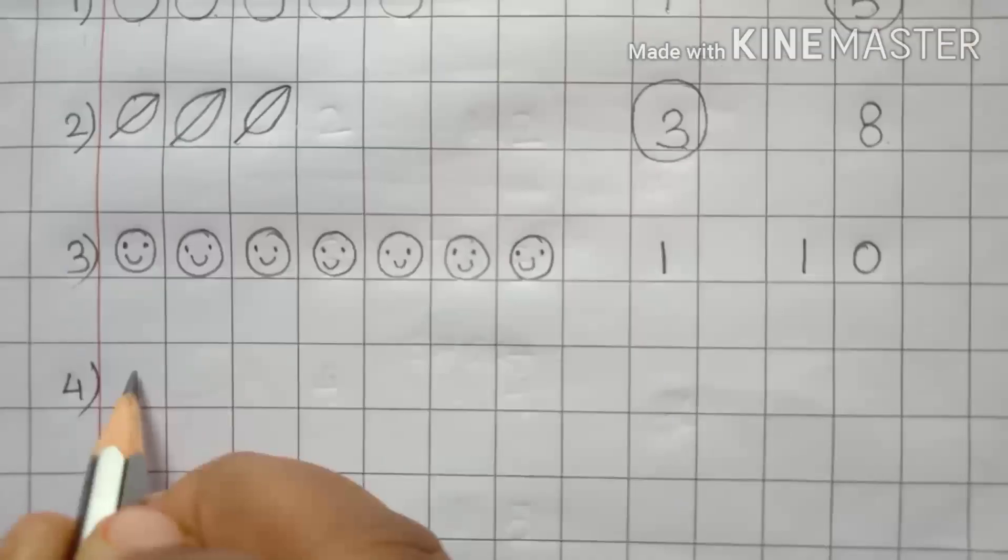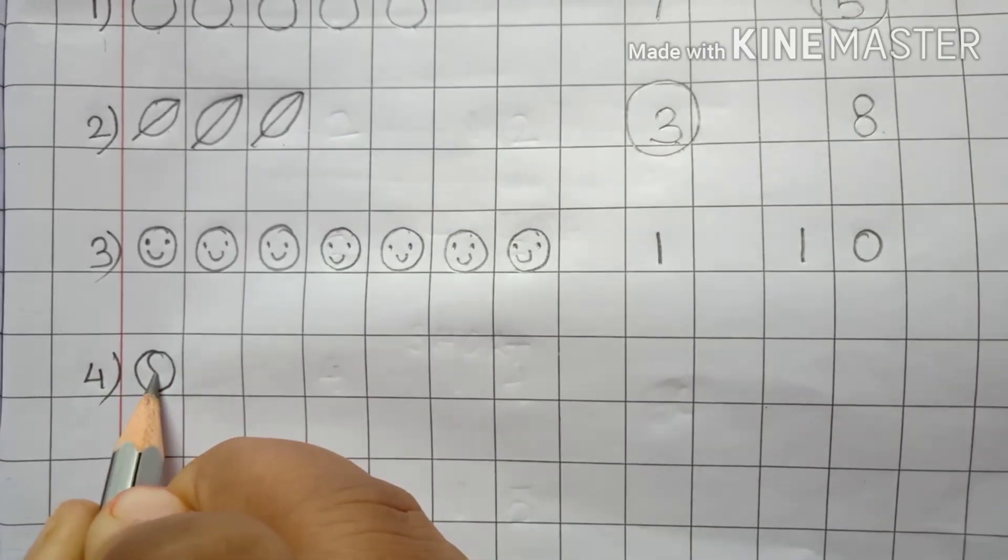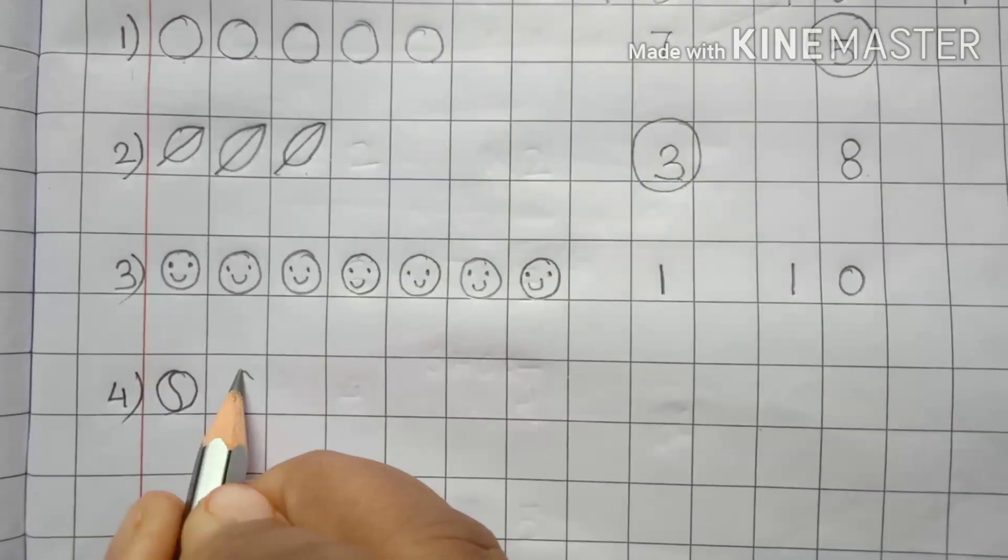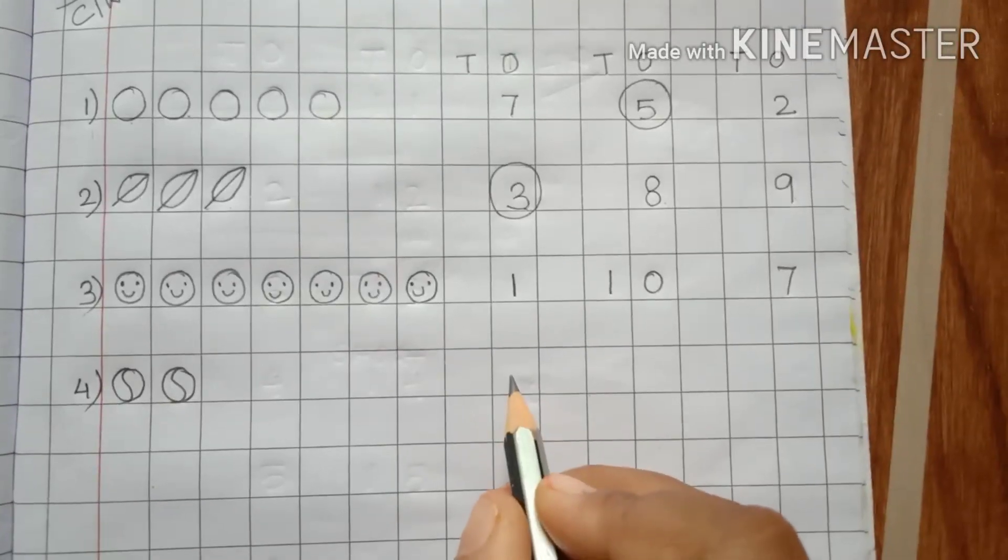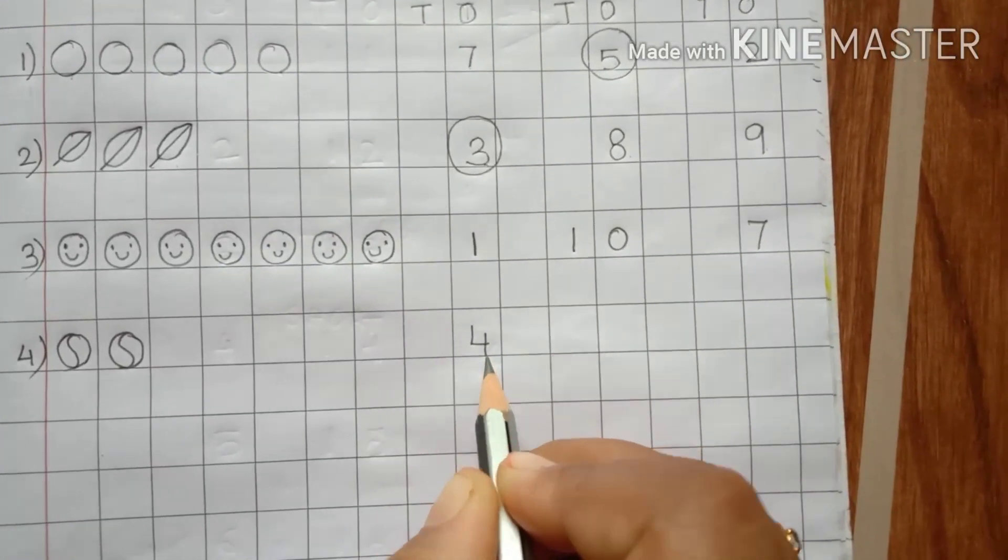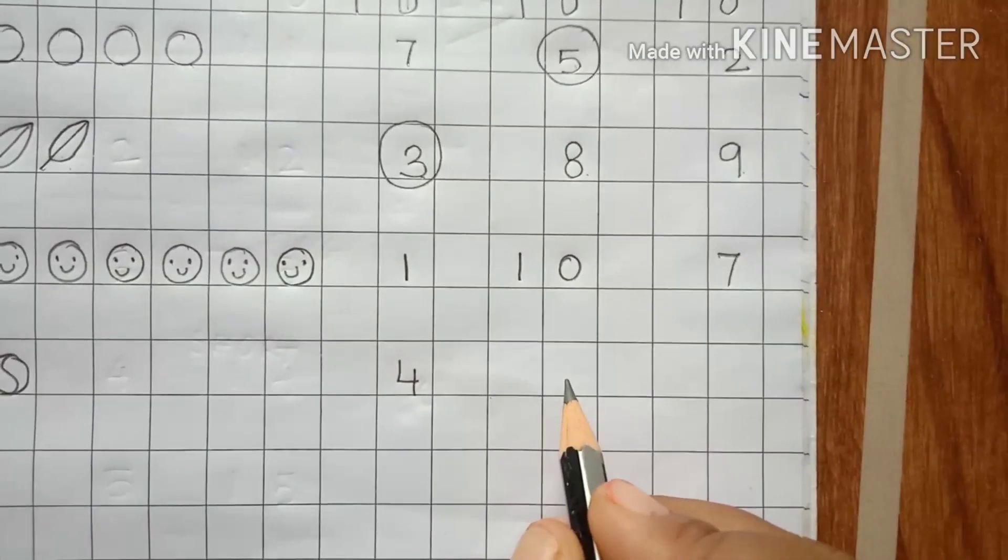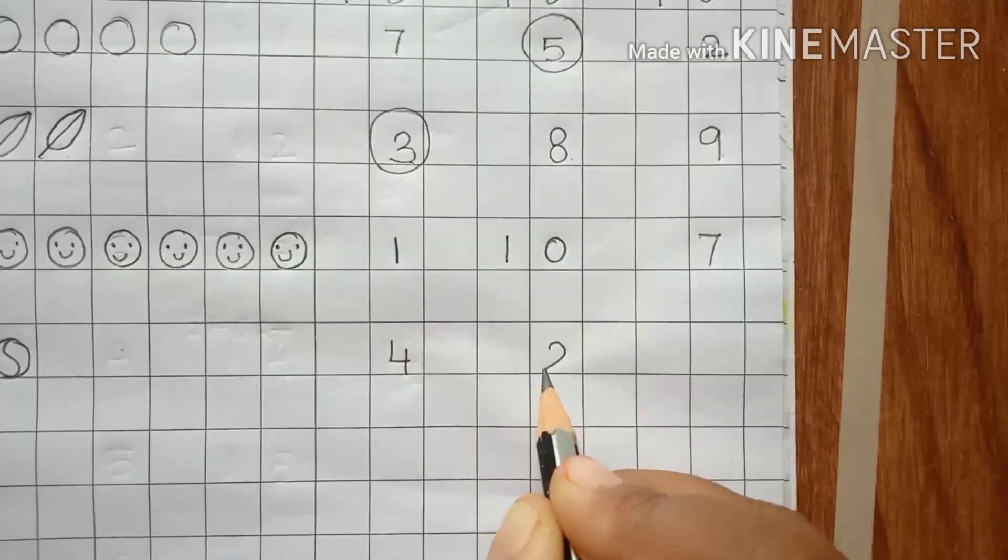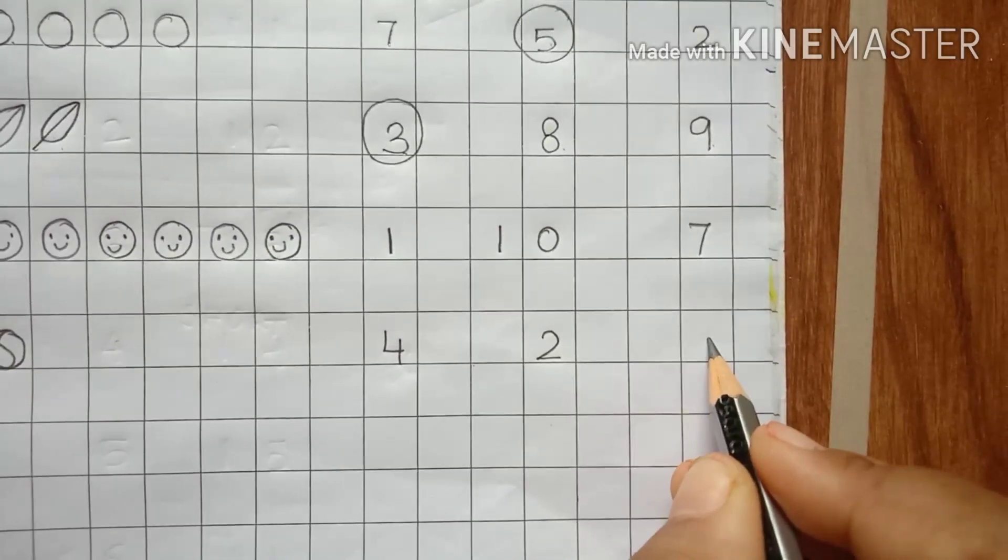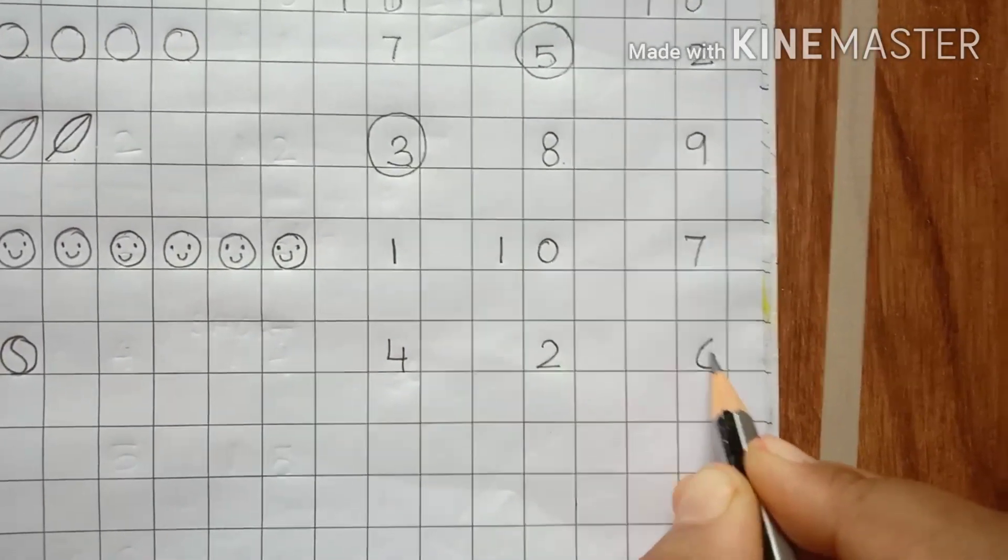So children, you have to do it by yourself. So we are drawing here balls. 2 balls here. This is 4, 2, and 6.